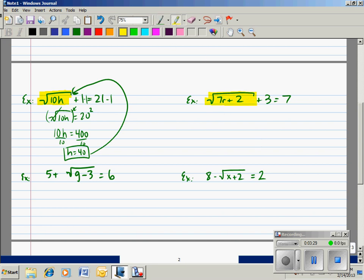In example 3, I want to isolate the radical. That's the term I want to get all alone. So in order to do that, I will subtract 3 from both sides, which gives me the square root of 7r plus 2 is equal to 4. Now I want to get rid of the square root. Since the radical is all alone, I can get rid of it next. And the opposite of square root is squared. And those operations cancel or undo each other. And 4 squared is 16. Now we simply solve like a regular problem. Subtract 2 gives us 7r equals 14. Divide by 7.